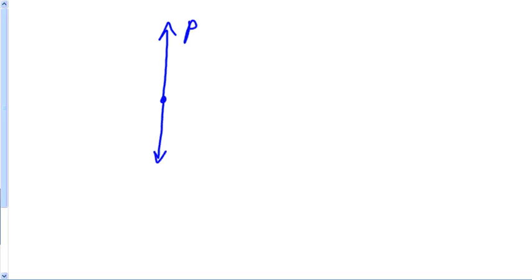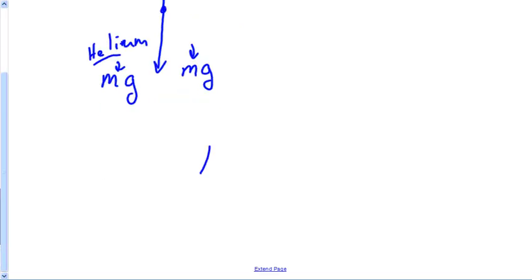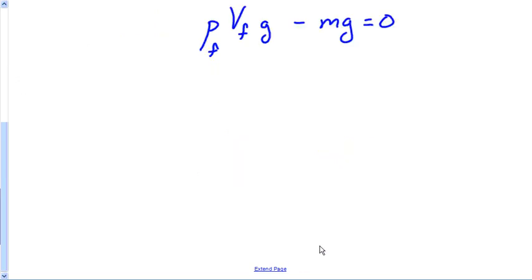Remember: on pretty much any buoyancy question, you're looking for ρ_f × V_f × g with a mg pulling the other way. This problem was harder because it had two mg's — one for the helium mass and one for the mass to lift. But a basic buoyancy equation is just ρ_f × V_f × g − mg = 0.